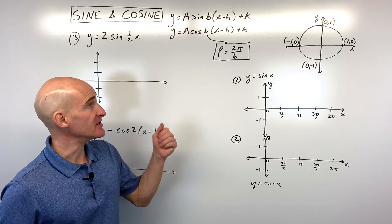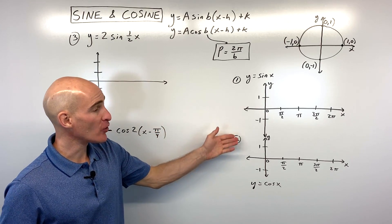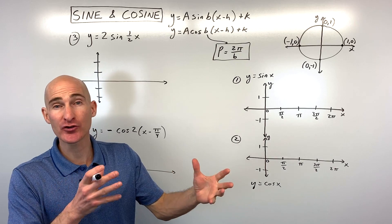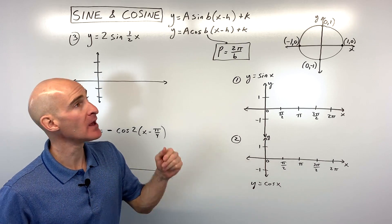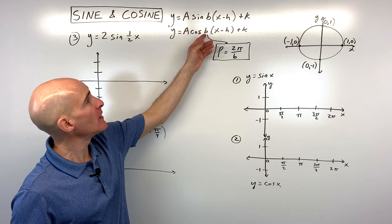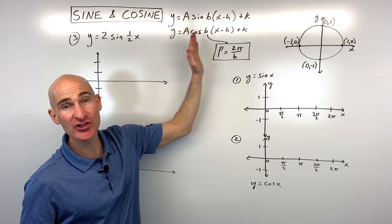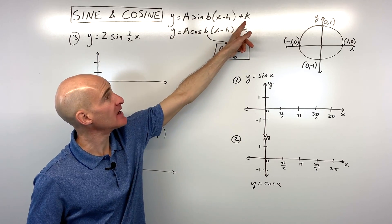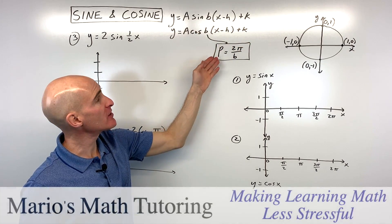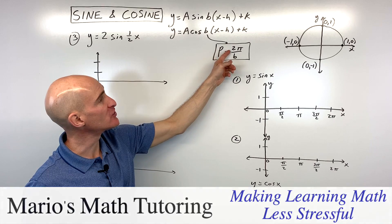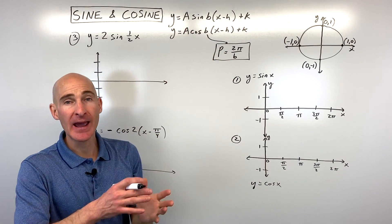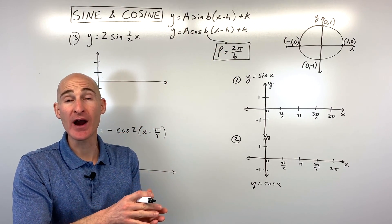In this video you're going to learn how to graph the sine and cosine graphs as well as graphing sine and cosine when they're transformed. We're going to be working with this general formula where h is the horizontal shift, k is the vertical shift, b is related to the period through the formula 2π divided by b, and a is going to be our amplitude or our vertical stretch or compression.